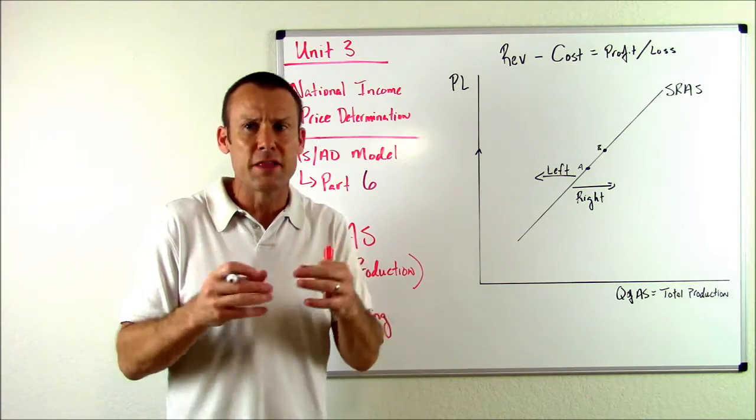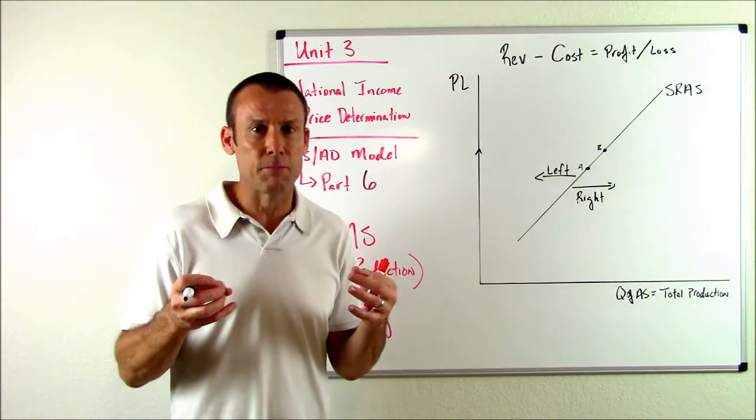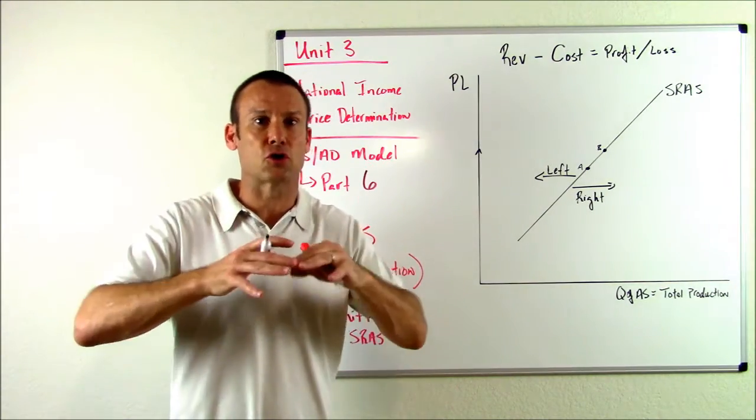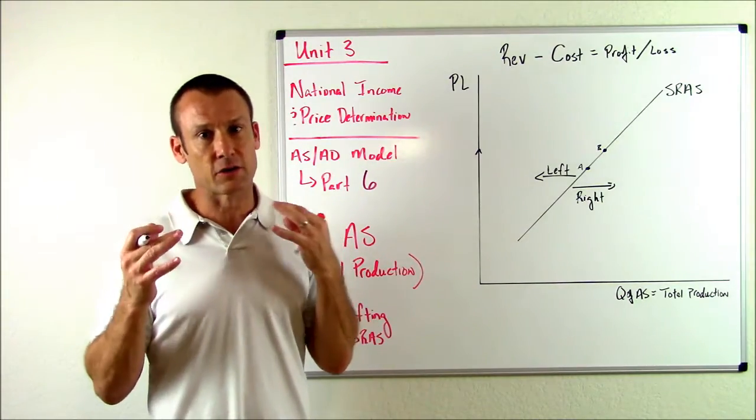What are the things, what are the costs that every business has to deal with? That's what we're mainly focused on. What are these costs that are so big they could actually shift the aggregate supply curve? And here comes the list.